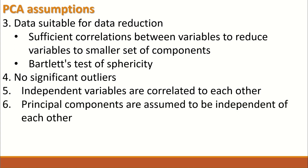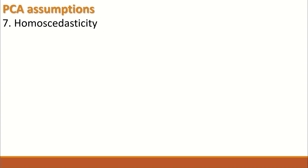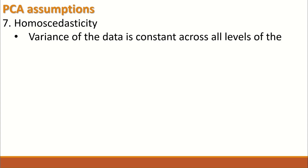The fourth assumption is that there are no significant outliers. The fifth assumption is that independent variables are correlated to each other. Additionally, principal components are assumed to be independent of each other. Finally, there should be homoscedasticity, in which the variance of the data is constant across all levels of the independent variables.